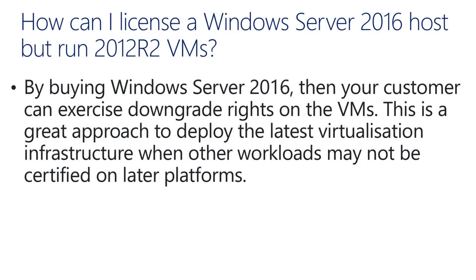How can you license a Windows Server 2016 host but run 2012 R2 virtual machines? If you buy Server 2016, you can use it as the virtualization platform and exercise downgrade rights on the VMs — getting the latest Hyper-V 2016 infrastructure while still running applications that require Windows Server 2012 R2. Important: exercising downgrade rights is an end user right, and the end user must supply the media and product key. If they don't have access, they need Software Assurance, which grants access to previous versions and product keys.